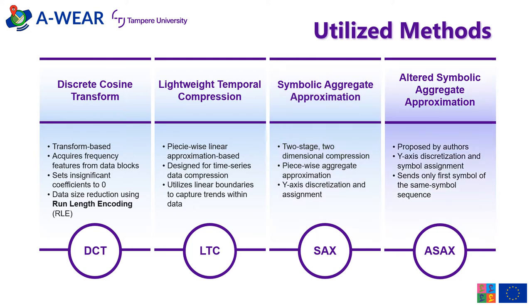Altered symbolic aggregate approximation is the compression method designed by the authors of this work to overcome some of the shortcomings of the previously mentioned methods. Just like SAX, it discretizes the y-axis but assigns each sample to the closest alphabet symbol. It then outputs only the first sample of each same-symbol sequence.